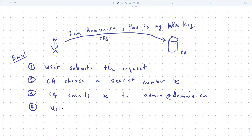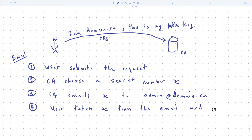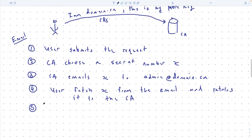The user either fetches the secret X and copies it into the website, or clicks on the link — basically they relay back to the CA that they know X. Then the CA says: you convinced me — I'm going to sign a certificate with your domain name and your public key. So the CA issues and signs the certificate.